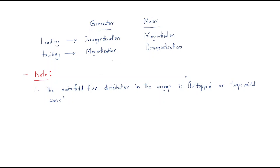Generally, machines are of two types: generator and motor. In both types, two things happen — leading and trailing. The behavior of leading and trailing is different for a generator and different for a motor.